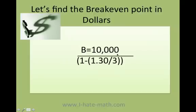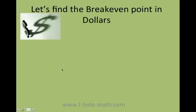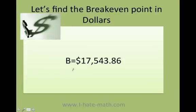The formula is: fixed cost divided by one minus variable cost over price. The fixed cost is ten thousand dollars, variable cost is one point thirty, and the price is three dollars. First I compute variable cost over price: one point thirty divided by three equals point forty-three. Then I do one minus point forty-three, which gives point fifty-seven. Finally, ten thousand divided by point fifty-seven gives the answer.